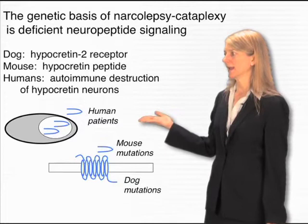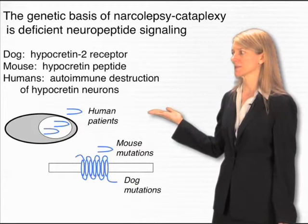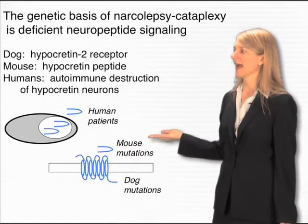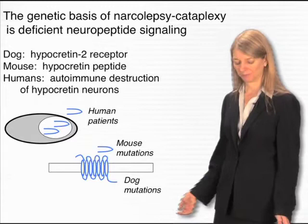There are neurons in the brain that make hypocretin. In human patients with narcolepsy and cataplexy, these neurons are typically lost through autoimmune destruction, leading to the loss of this peptide. The mouse mutants that also have narcolepsy have a defect in the hypocretin gene itself, while the rare dogs that have narcolepsy have defects in the hypocretin-2 receptor.